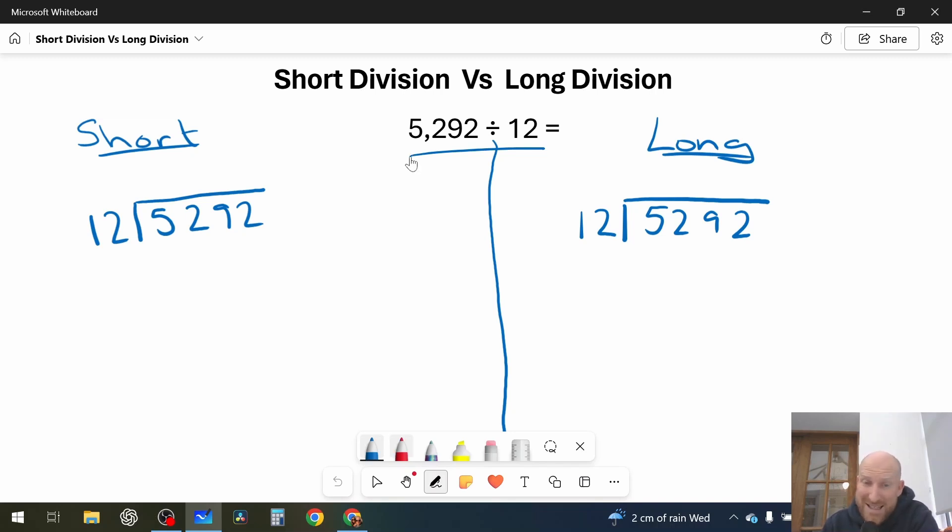And the last thing that is the same about short division and long division is that a list should be made before doing any working out. So the number that we are dividing by is 12, so I'm going to make a list of the 12 times table.